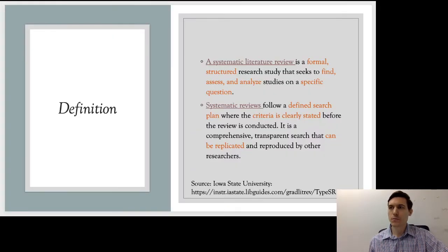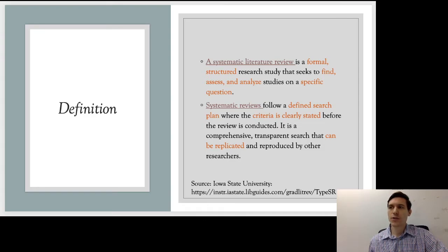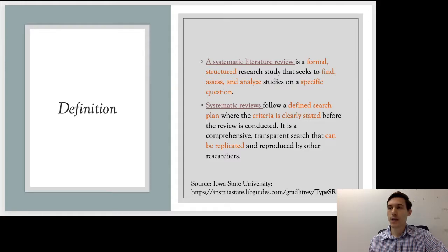So let's start with the definition. A systematic literature review is a formal, structured research study that seeks to find, assess, and analyze studies on a specific question. The key here is that there's a formal and structured process. We're going to define search terms, define the databases, and it's something that could be replicated by someone else because they could follow the same steps that we follow. That's what makes it systematic.